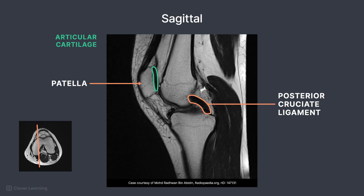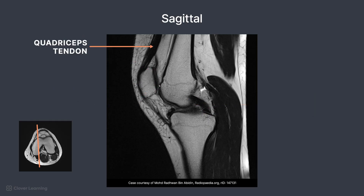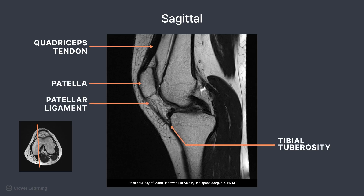Remember, the patella has a base located superiorly and an apex located inferiorly. The quadriceps tendon is located superior to the patella, and the patellar ligament is inferior and attaches to the tibial tuberosity.